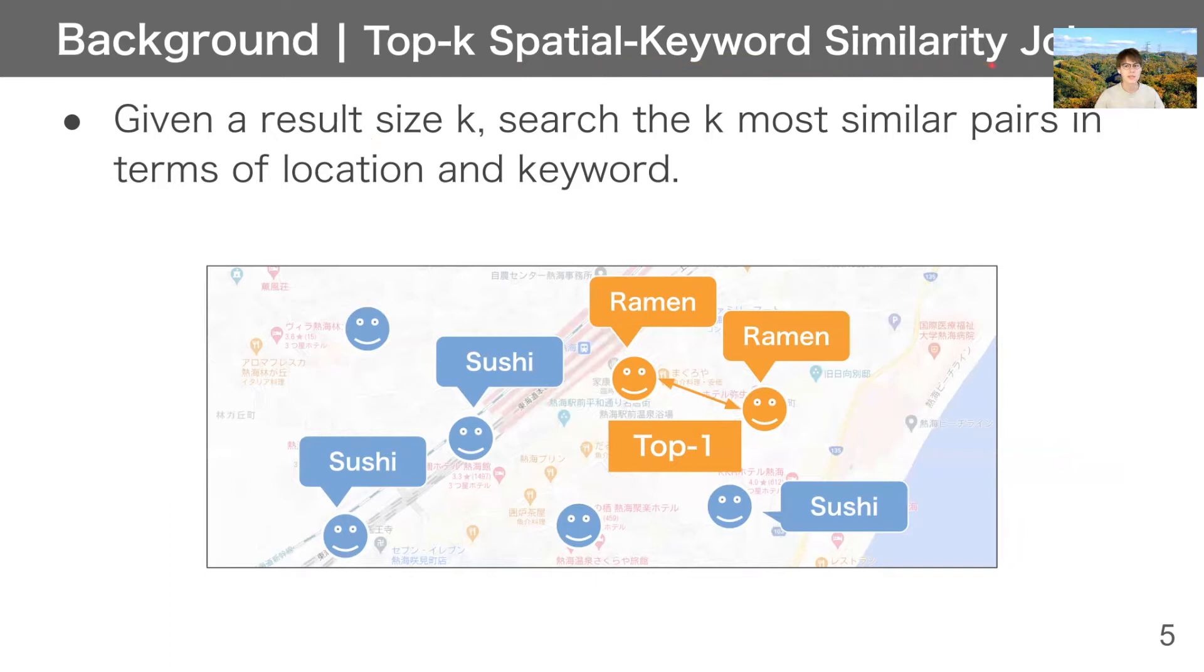To avoid this problem, Top-K Spatial Keyword Similarity Join Problem has been proposed. In this operation, given a result size k, we search the k-most similar pairs in terms of location and keyword. Since we can know the result size, it is more useful for some situations, such as advertisement. Therefore, we address this issue. In other words, we propose the first algorithm for Top-K Spatial Keyword Similarity Join.